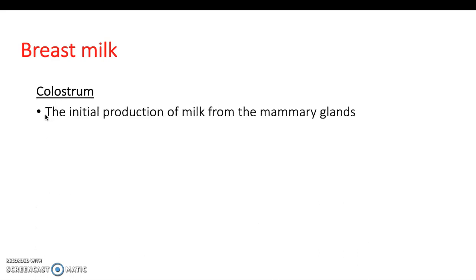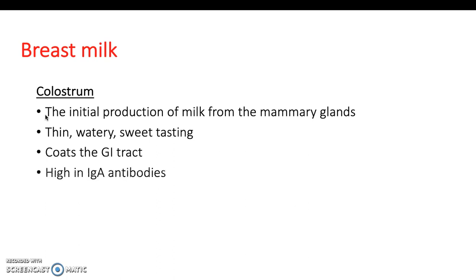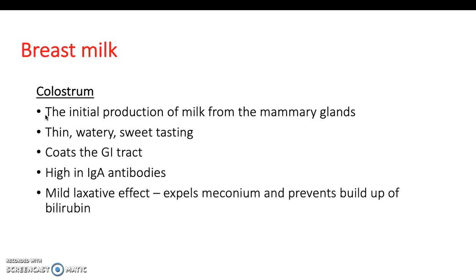Colostrum is the initial production of milk from the mammary glands, produced in the first few days after delivery, and it's the most essential milk for the baby. It's thin, watery, and sweet tasting, then goes to a thicker and creamier milk after the first few days. It helps coat the GI tract and is really high in IgA antibodies. It also has a mild laxative effect, which is important because it reduces the risk of neonatal jaundice by expelling meconium and preventing buildup of bilirubin.